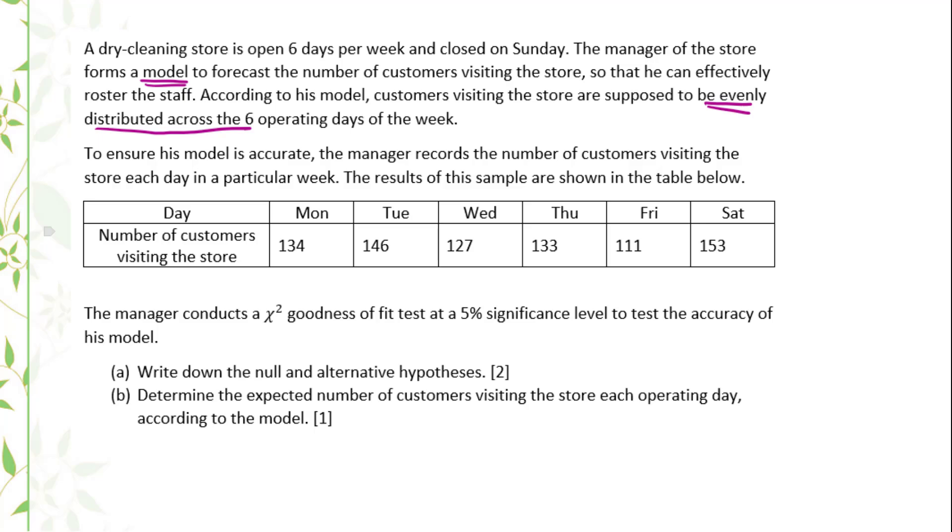The manager conducts a chi-square goodness of fit test at a 5% significance level to test the accuracy of his model. Whenever you see 5% significance level means p-value less than 0.05, reject H0.